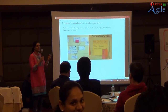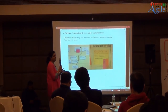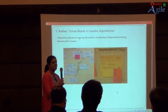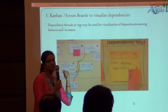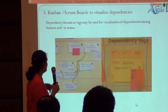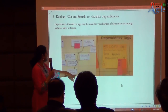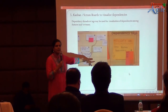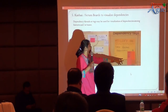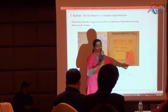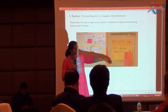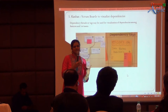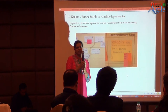The fifth suggestion is visualizing your dependencies. You can use your Scrum or Kanban boards to visualize dependencies — draw a thread joining stories to show dependency, or put a small tag to indicate an external dependency with another story.